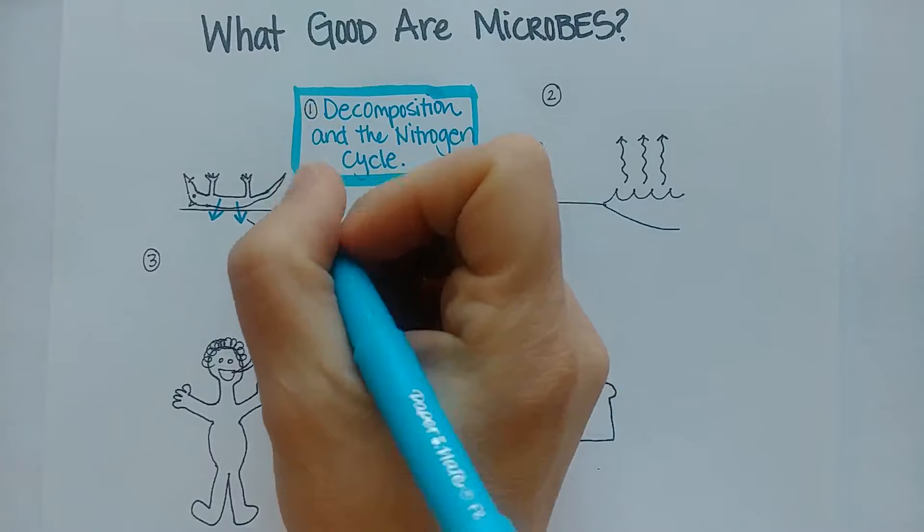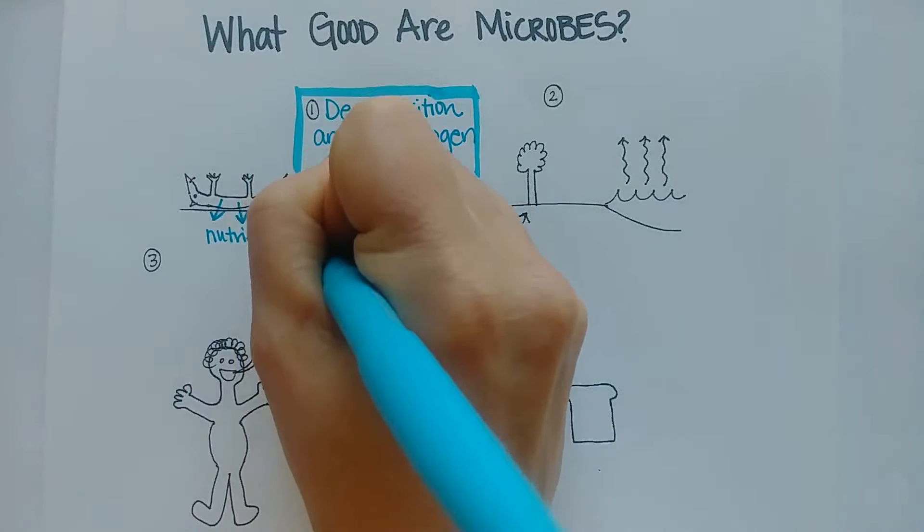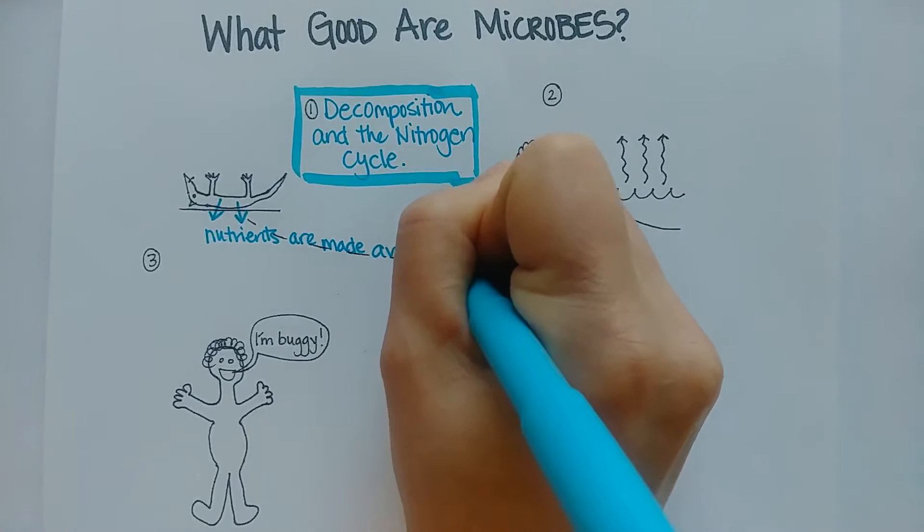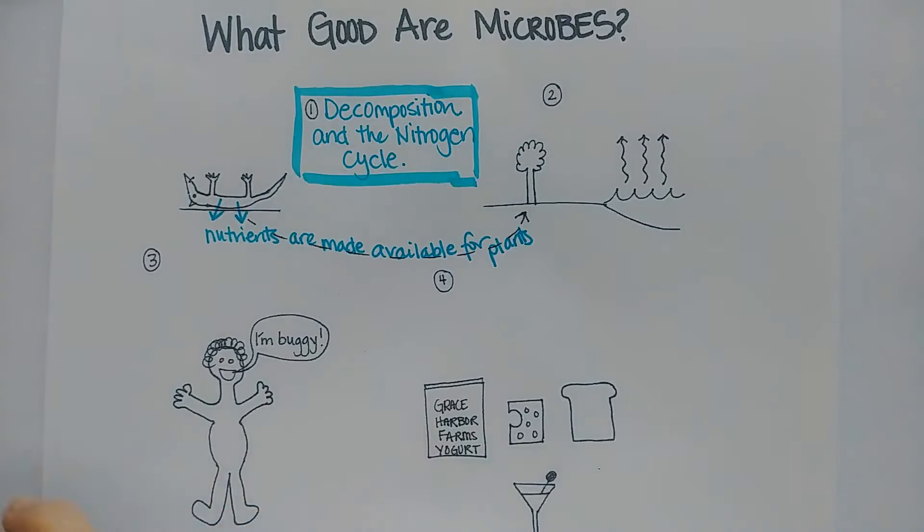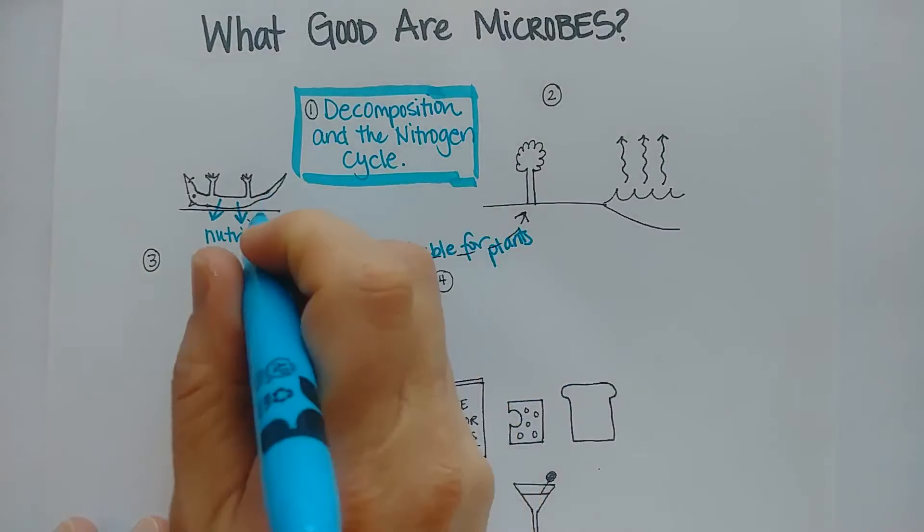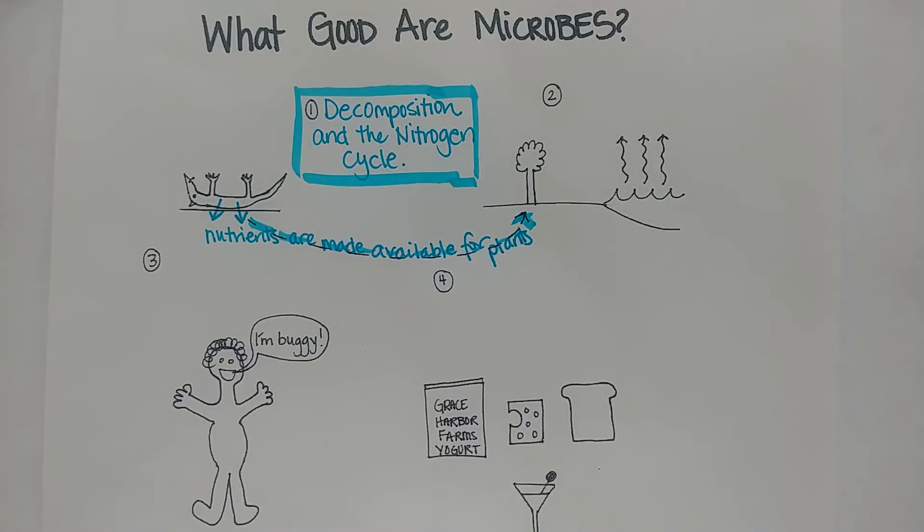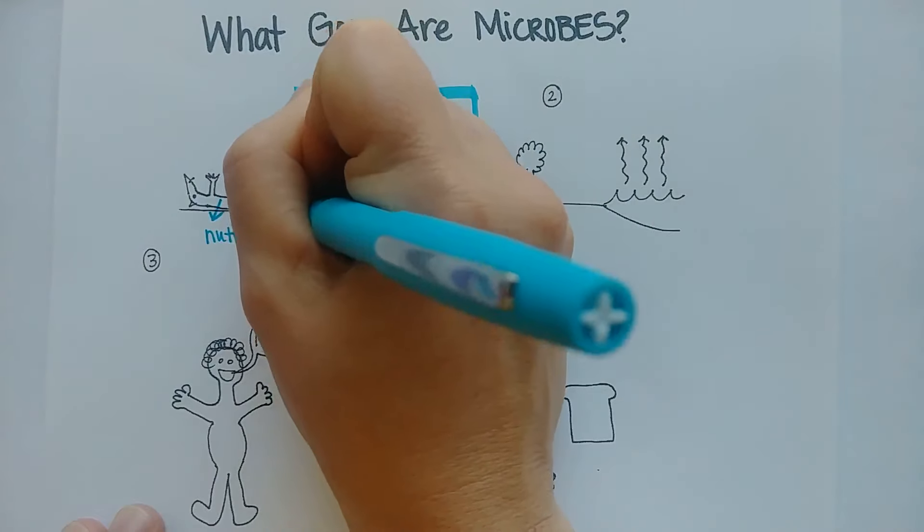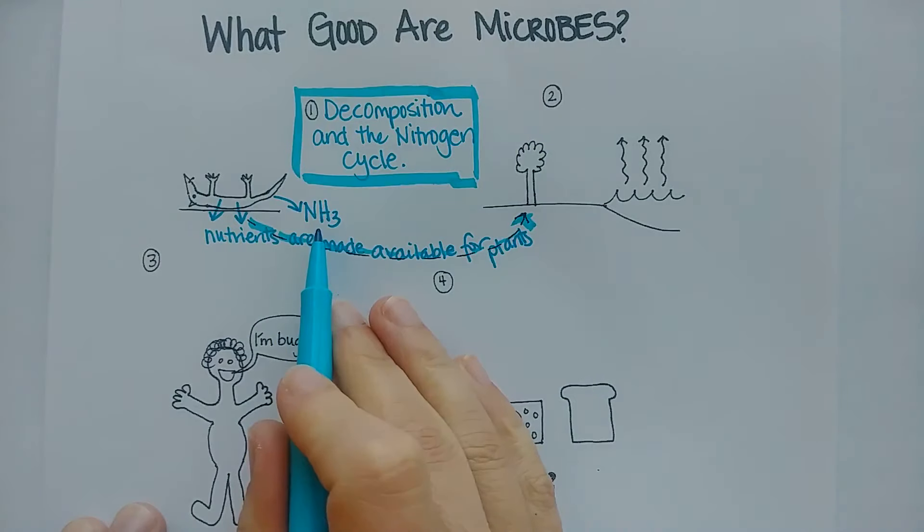The other thing that microbes are doing here: first of all they're breaking down the animal itself, and then when the animal was still alive and going to the bathroom, it was giving off nitrogenous waste, mostly in the form of ammonia. There are bacteria in the soil that can convert ammonia into nitrates, and these still have nitrogen in them.